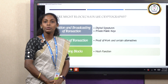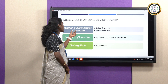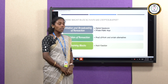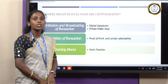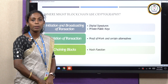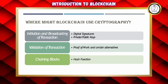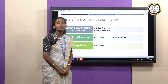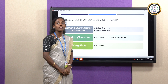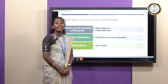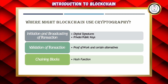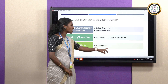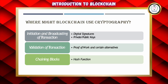Cryptography is the study of encryption and decryption. In the stage of initiating or broadcasting a transaction, we use digital signatures and keys called private and public keys. Validation of a transaction takes place through the consensus mechanism — mutual agreement of nodes for validation. Examples of consensus mechanisms are Proof of Work and Proof of Stake. For chaining blocks, the hash function is used to link blocks together.